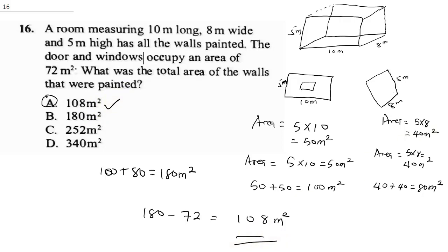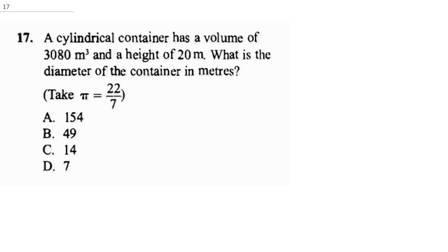As easy as that, you can solve that question, and don't forget to hit the subscribe button and follow us. Question 17 says, a cylindrical container has a volume of 3080 meter cube and a height of 20 meters. What is the diameter of the container in meters?